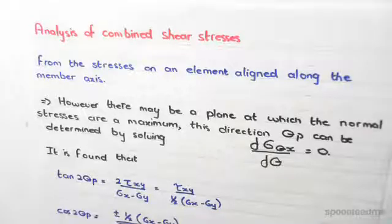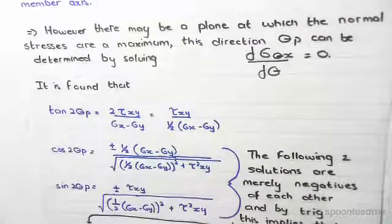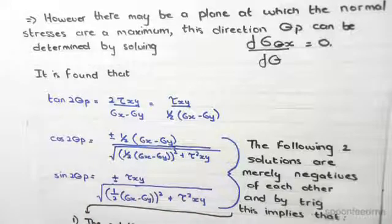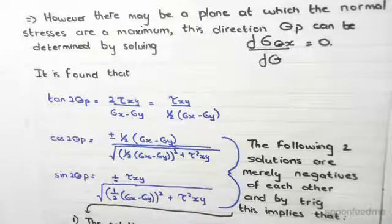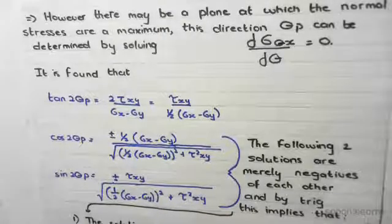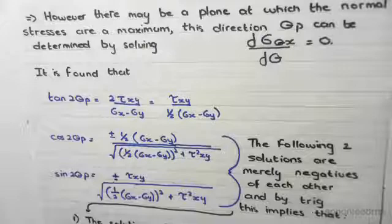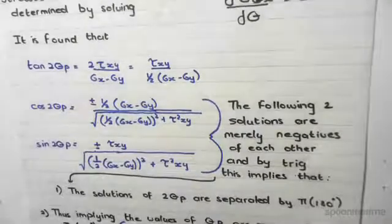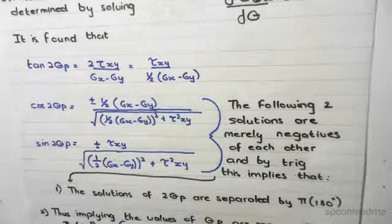in terms of tan, cos, and sine. And these are the final results, in terms of tan, cos, and sine. And if you look at the cos and sine, they are just negatives of each other. And the fact that they are found in terms of 2 theta p is telling you that the solutions are separated by 180 degrees. Ok? This is just simple trig.